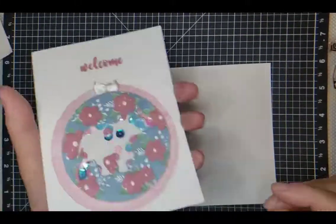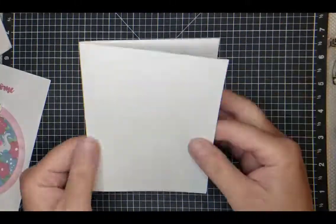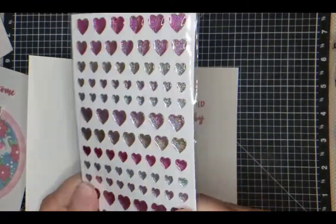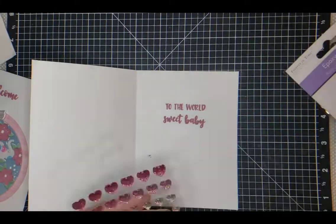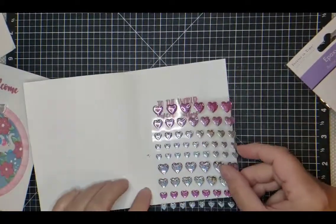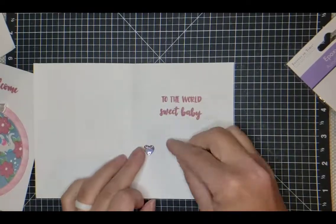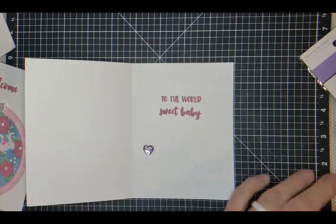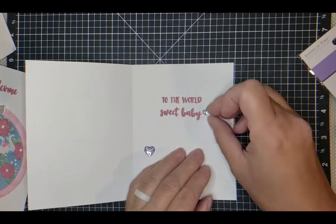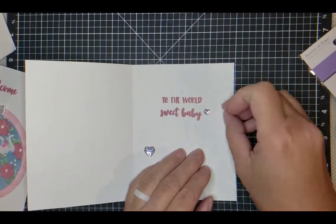Here we have 'welcome' and I have a little bow there from the dollar store—'to the world.' Uh-oh, there's another mistake. I'm so clumsy. I'm just trying to pick out the enamel dot here that's closest in color.